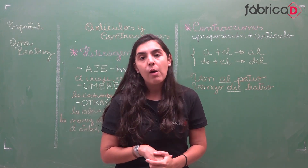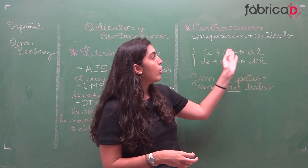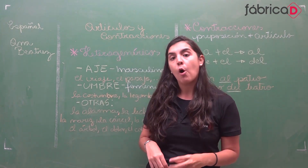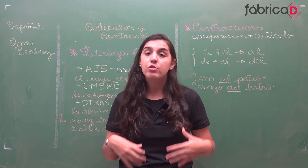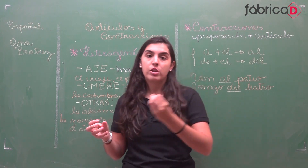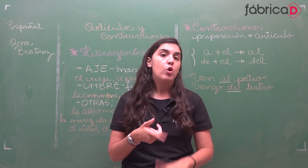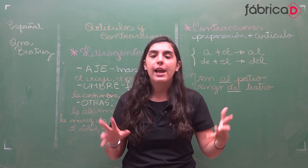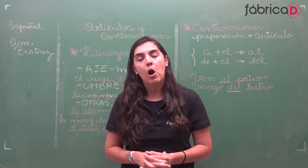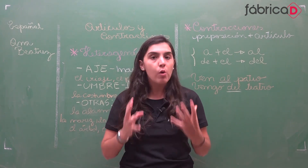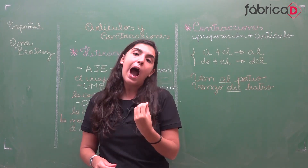Para seguir e terminar a aula: as contrações. O que são as contrações? São preposições mais artigos. Em espanhol, a gente só tem duas contrações — em português existem várias: 'na', 'de', 'do', 'da', 'nos', 'nas', 'aqueles', 'dele', 'dela', 'deles', enfim. Em espanhol, para ser talvez mais fácil, só existem duas, muito usadas. Que é a preposição 'a' com o artigo masculino singular 'el', que fica 'al' — o nosso 'ao' em português.